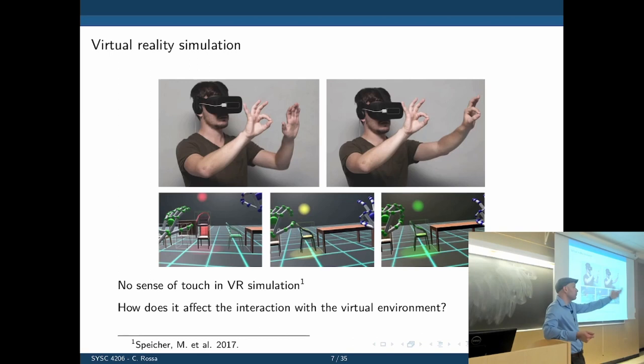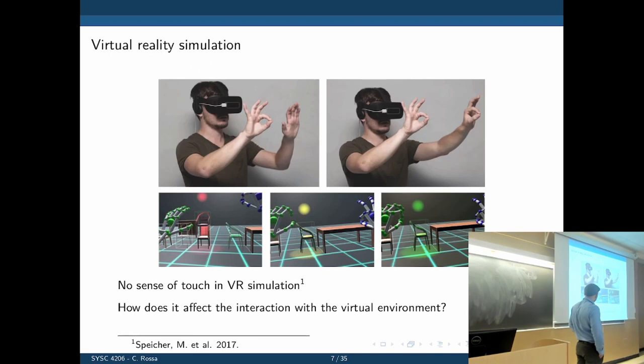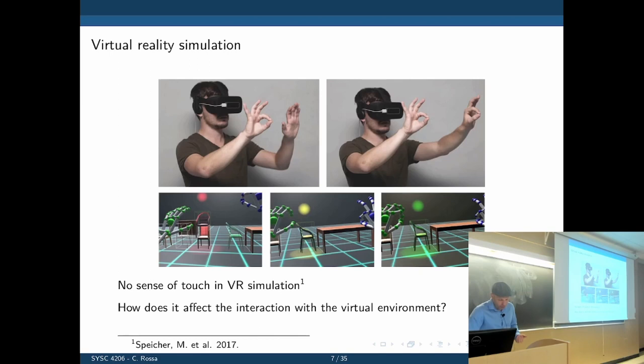It's not very intuitive — for example, if you grab a chair, you would expect that weight and shape to be there. If it's not, visual feedback is the only thing you have. So the sense of touch in the virtual simulation is gone. This gives you a pretty good motivation to use haptic devices with haptic feedback to restore this sense of touch.